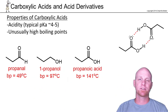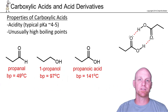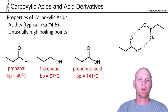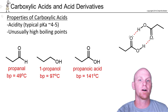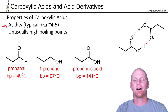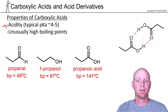In this chapter, we're not going to spend too much time talking about the physical properties of most of the derivatives, except for a couple of mentions here and there, but I do want to point out a couple of things about carboxylic acids themselves. We call them carboxylic acids for a reason — because they're acidic. A typical carboxylic acid, like acetic acid, has a pKa of about 4 to 5.